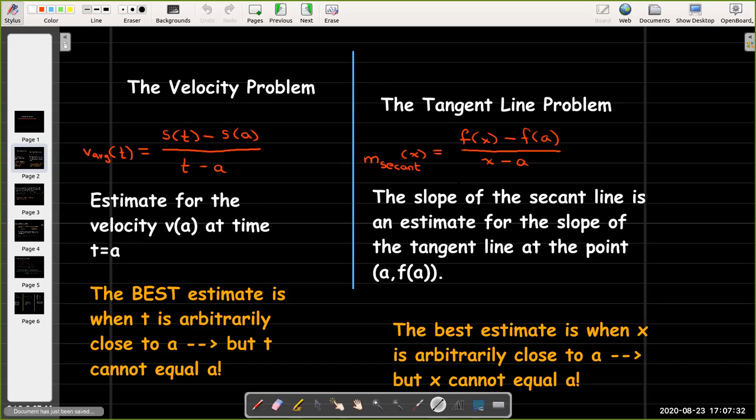In the tangent line problem, we were saying that if we could use the slope of the secant line as an estimate for the slope of the tangent line, and if our second point, our value of x, got closer and closer to a, we would get a better and better approximation.